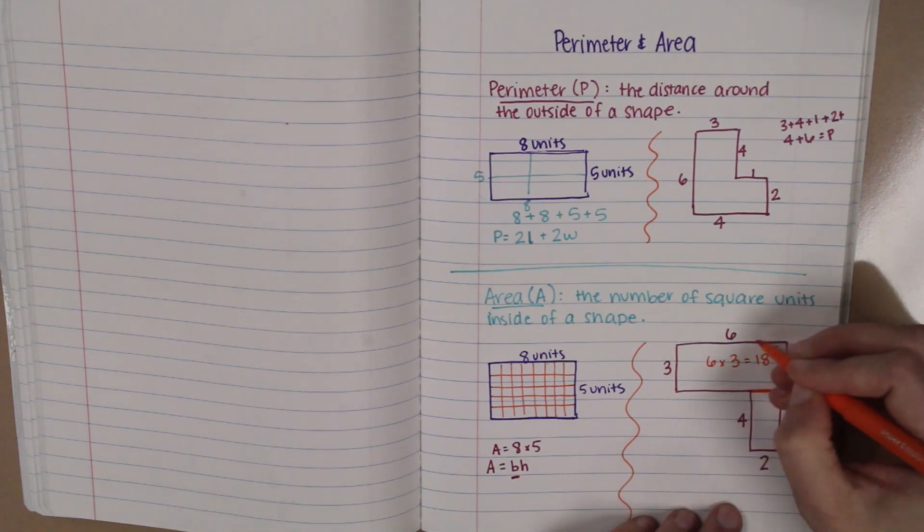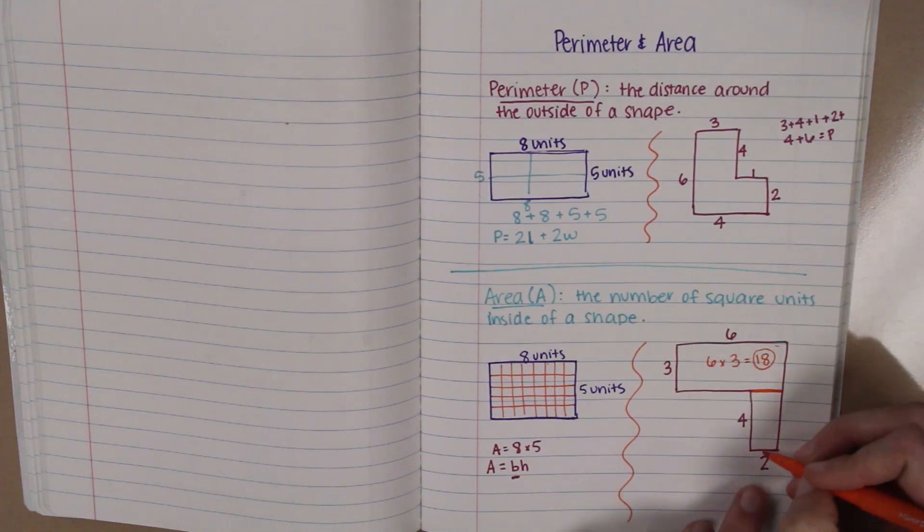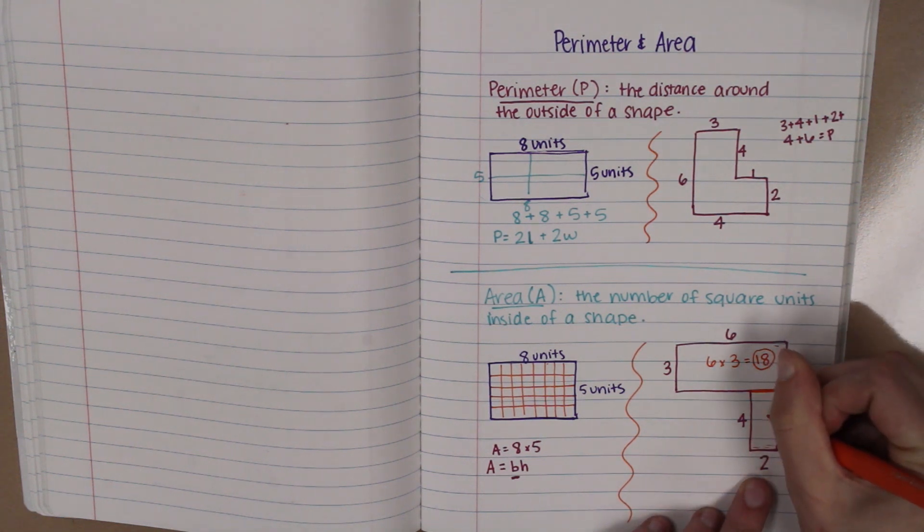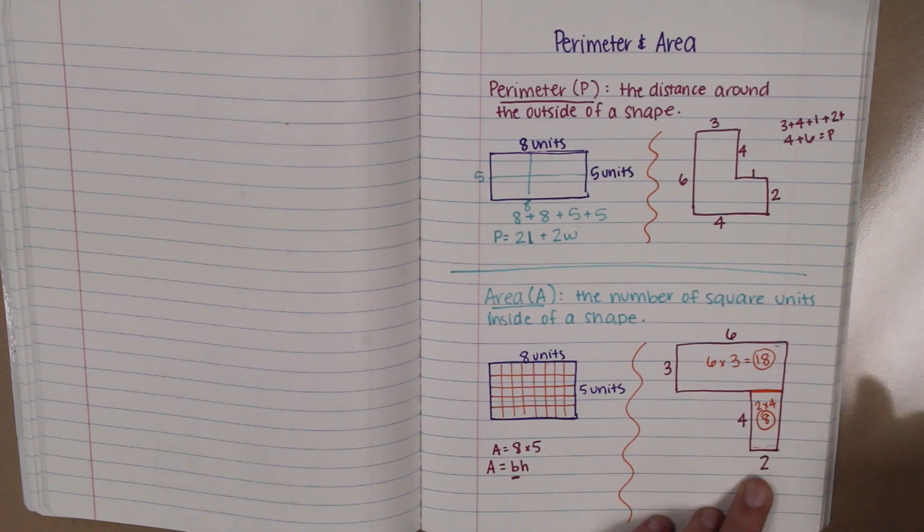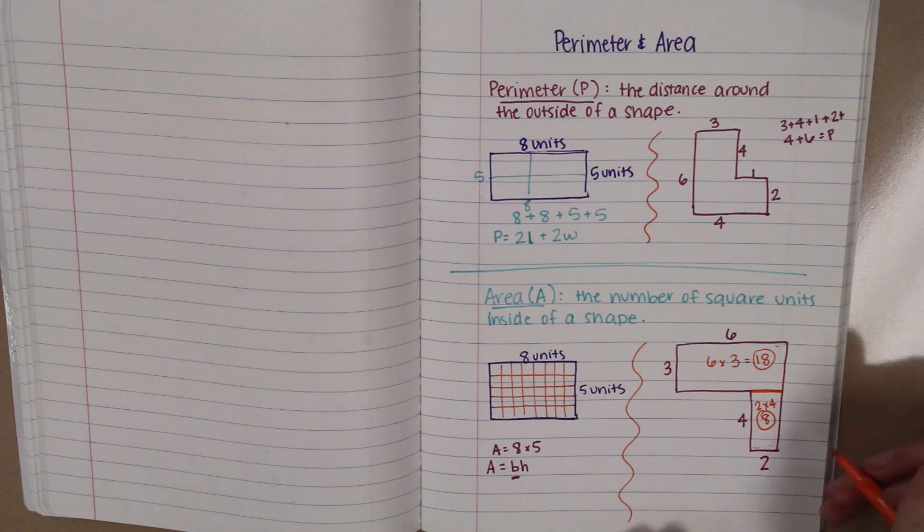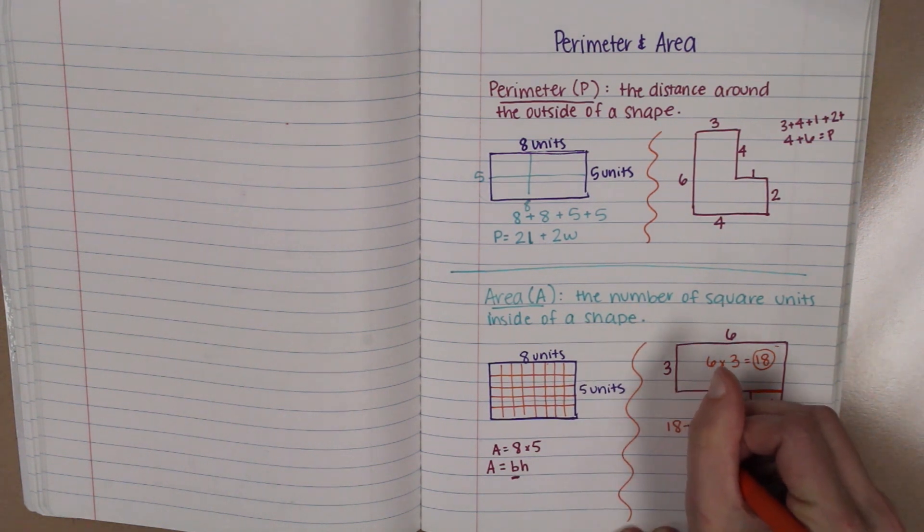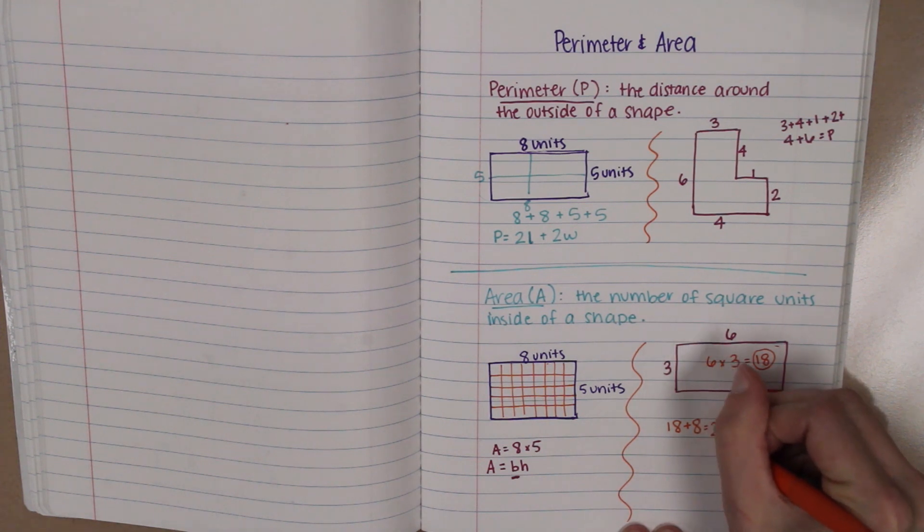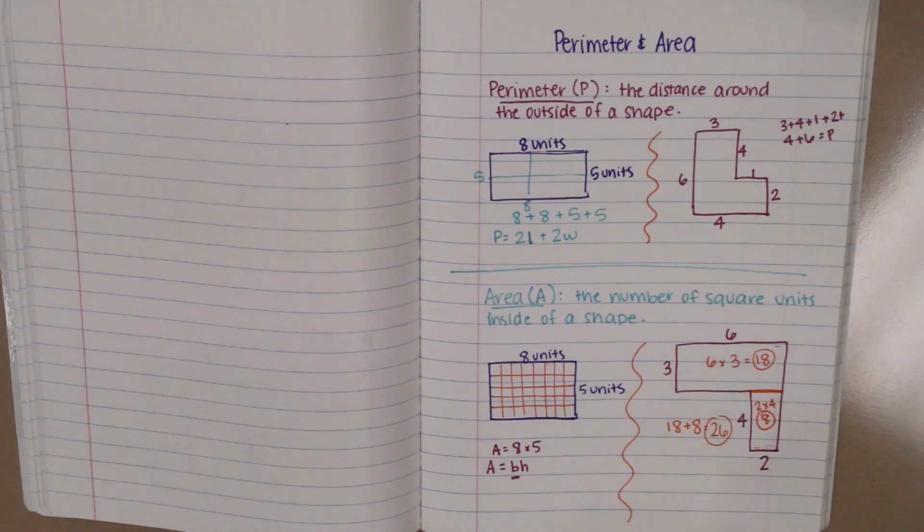So the area of just this section is 18. And then the area of this section is base, two, times height, four. Gives me an area of eight. If I know the area of both parts, then I know the area of the entire thing if I take the parts and put them together. So the area of this entire thing would be 18 plus eight, 26.